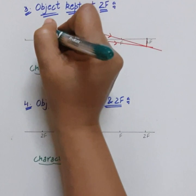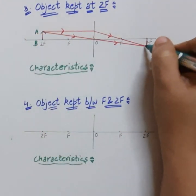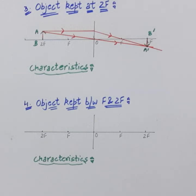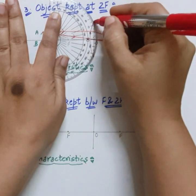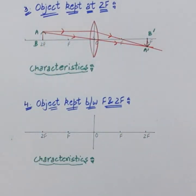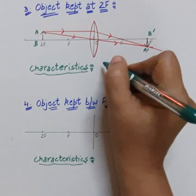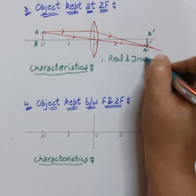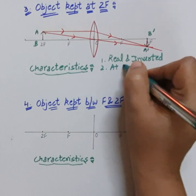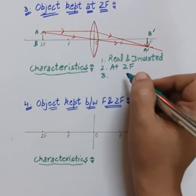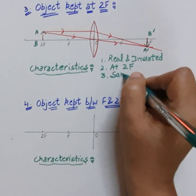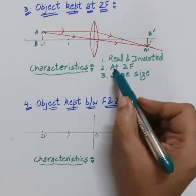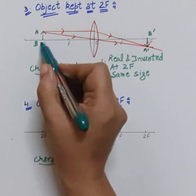Draw the image and arrows. Label the object AB and image A'B'. Draw the shape of the lens. The first characteristic is that it is real and inverted, formed by real intersection of rays. The position: image is formed at 2f. For size, comparing with a scale, the size of the image is exactly the same as the size of the object — a special case.